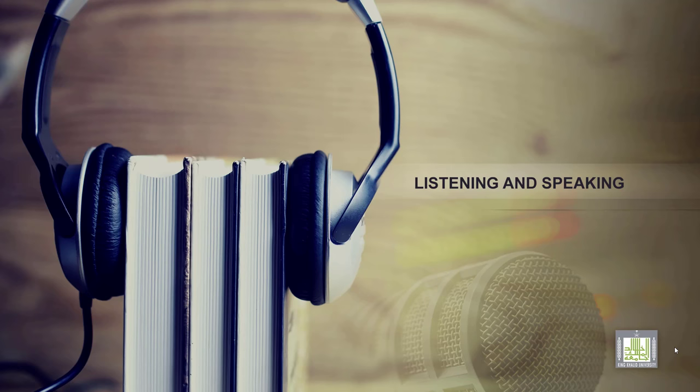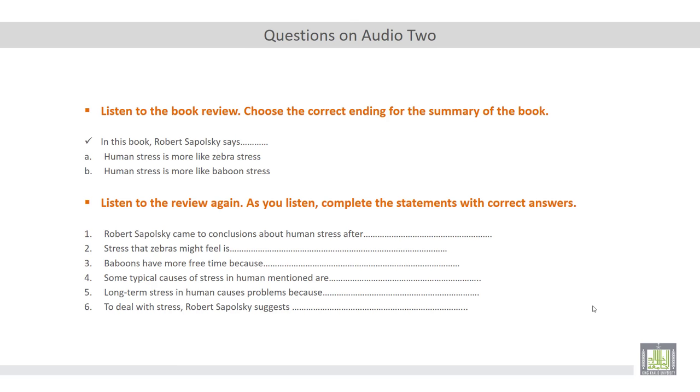So we are going to listen to a book review of a book called Why Zebras Don't Get Ulcer, authored by Robert Sapolsky. This book has been reviewed by someone called Gordon Park. So your role is to listen to the book review and then choose the correct ending for the summary of the book.